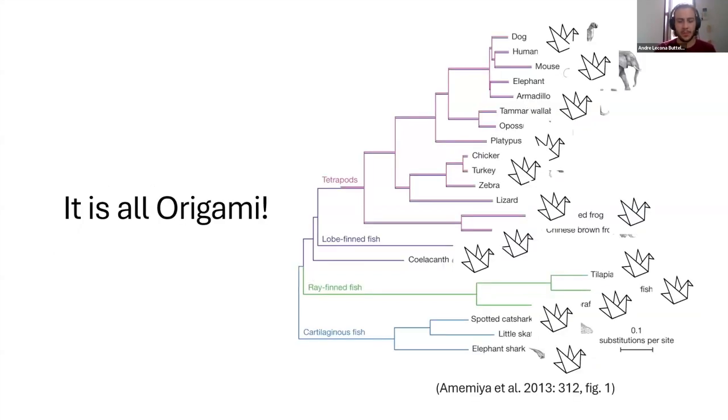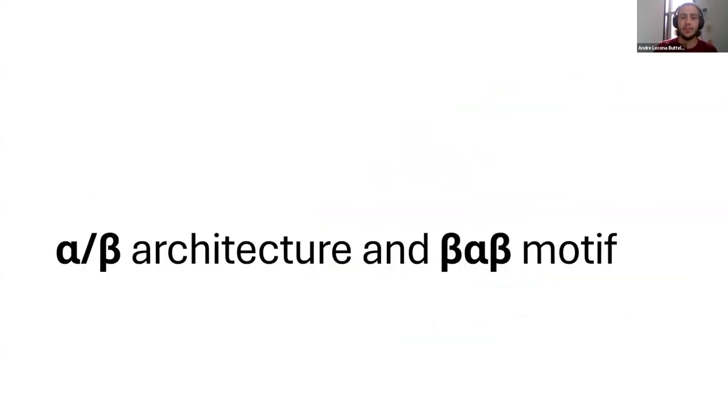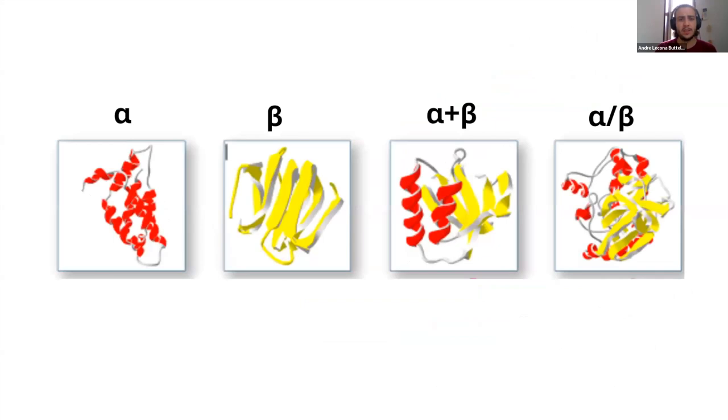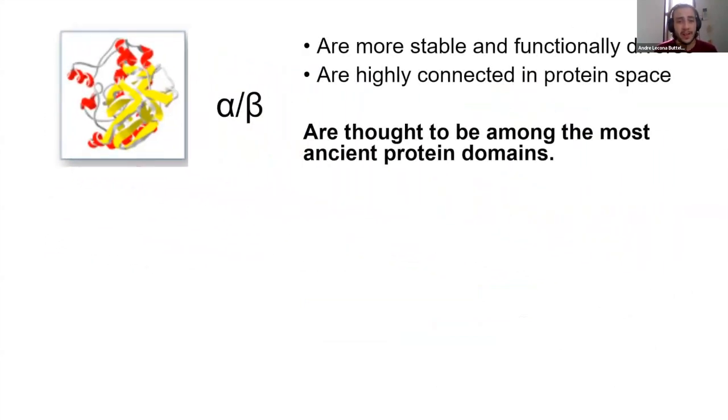So in order to approach this problem, people have done a lot of different organization of proteins. I'm going to introduce to you specifically one architecture of proteins. So the most common way of organizing them is by just alpha proteins, beta proteins, alpha plus beta, and alpha slash beta. This refers to the combination of alpha helices and beta strands that compose said proteins. The alpha slash beta are specifically interesting, because they are more stable and functionally diverse than the rest of the classes. And they're highly connected in protein space.